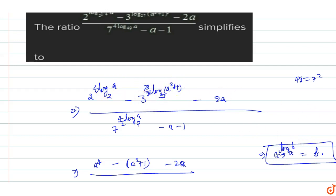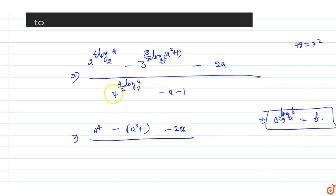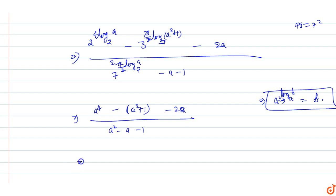This equals a to the power 4 minus a squared minus 2a minus 1, upon a squared minus a minus 1. So the numerator becomes a power 4 minus a squared minus 2a minus 1, and the denominator is a squared minus a minus 1.